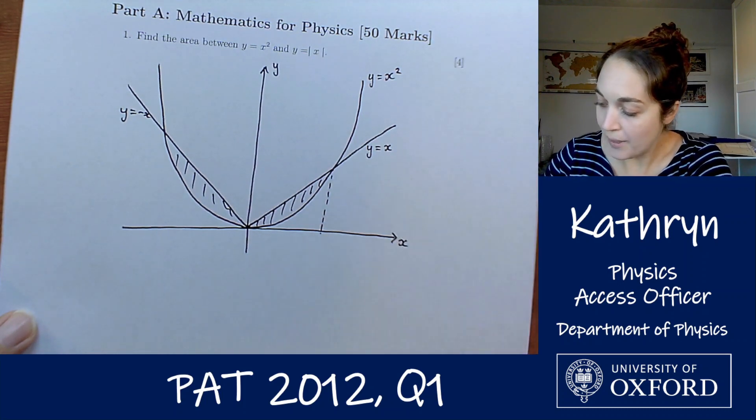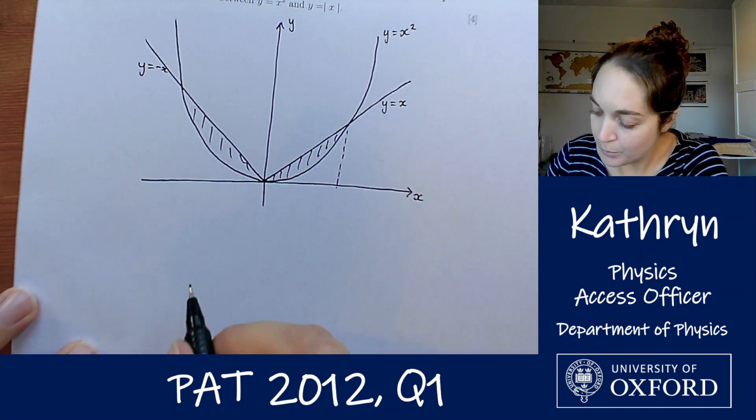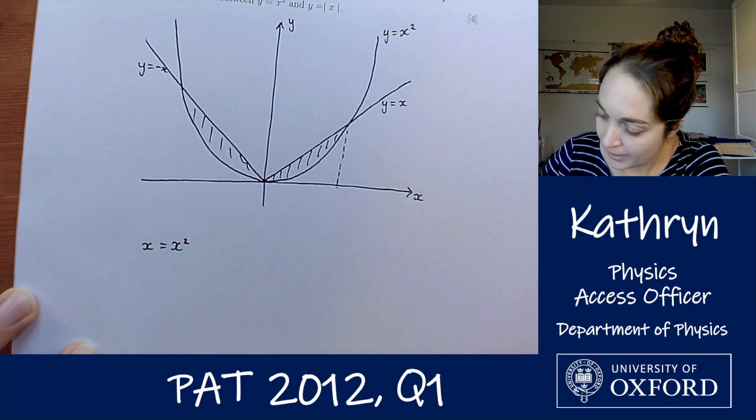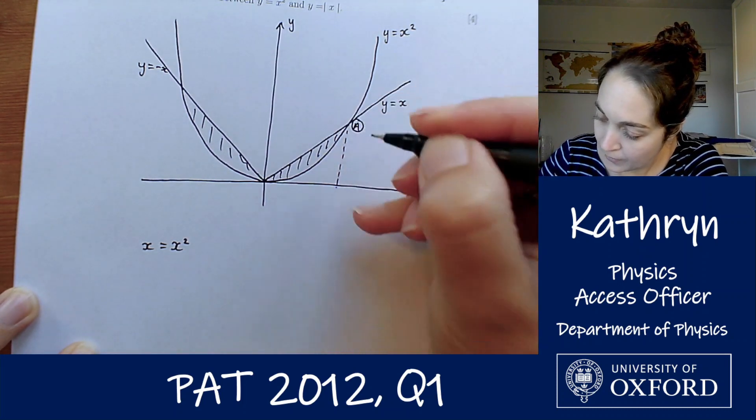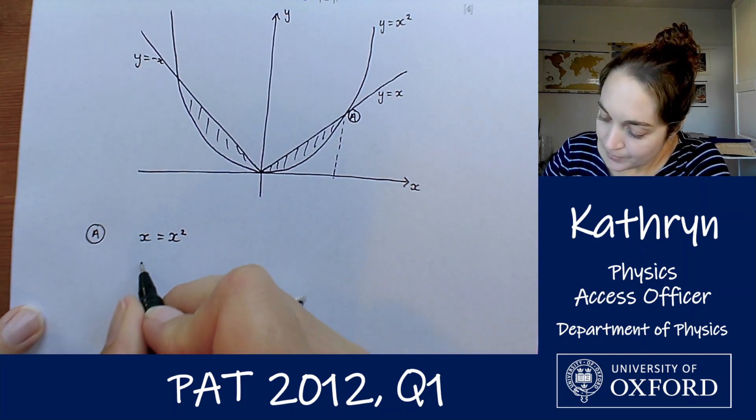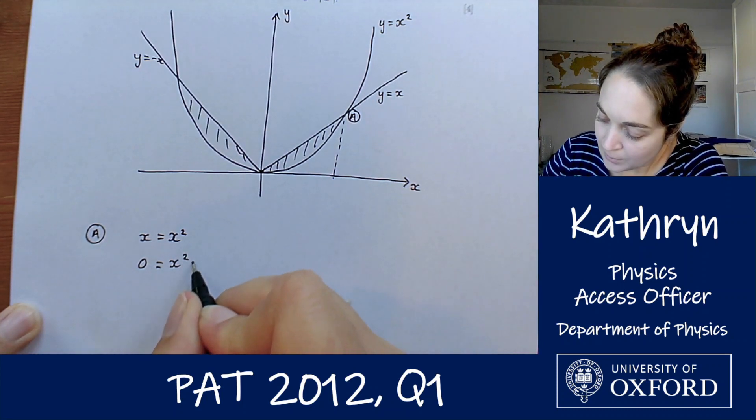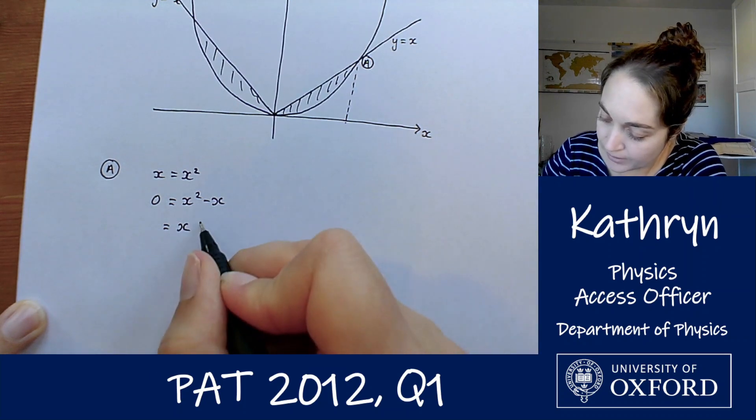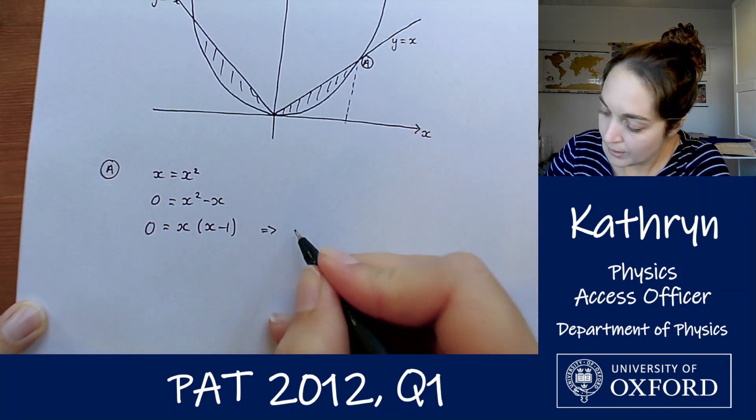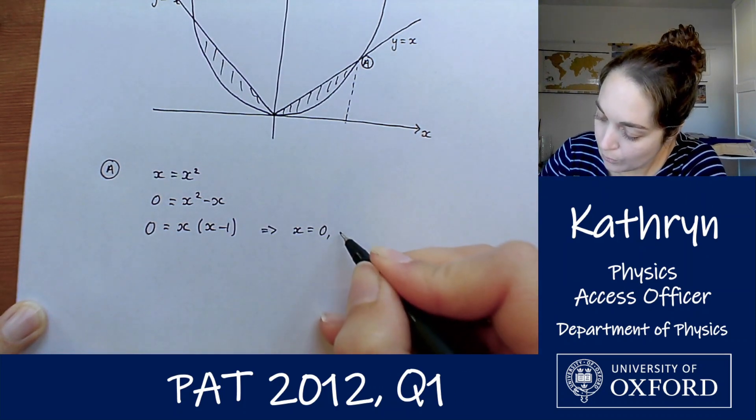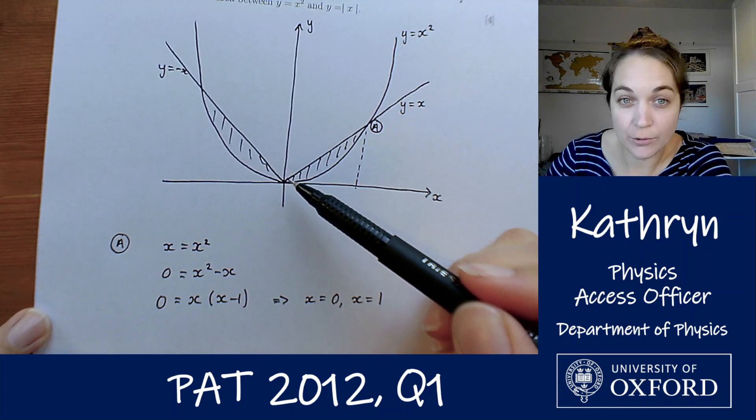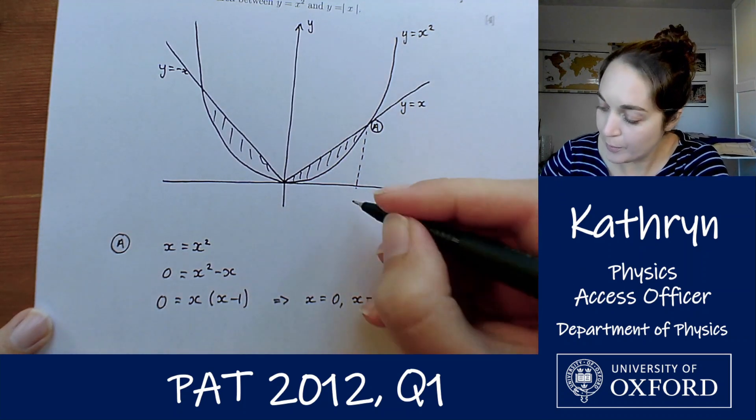So first of all, we need to find out what that point there is. So that is going to be the point where the two lines cross, i.e. x equals x squared. Let's label this as point A. So point A at A, x equals x squared. So 0 equals x squared minus x. Factoring out the x, we have x brackets x minus 1 equals 0. So x equals 0 or x equals 1. So the two curves cross at the origin, and they also cross here, so this must be x equals 1.